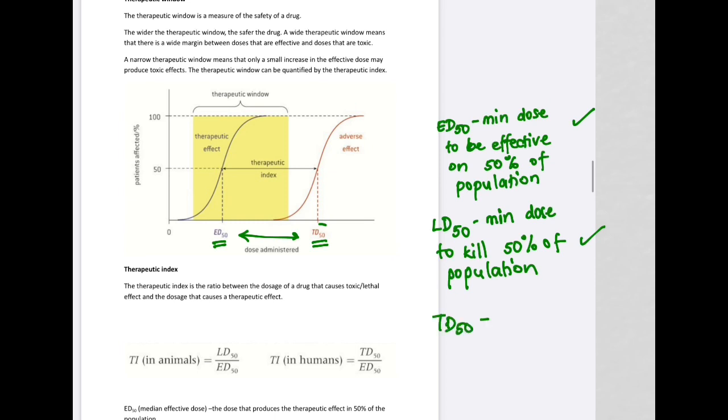TD50 is the toxic dose, which is the minimum dose where you're going to start having toxic effect observed for 50% of the population.